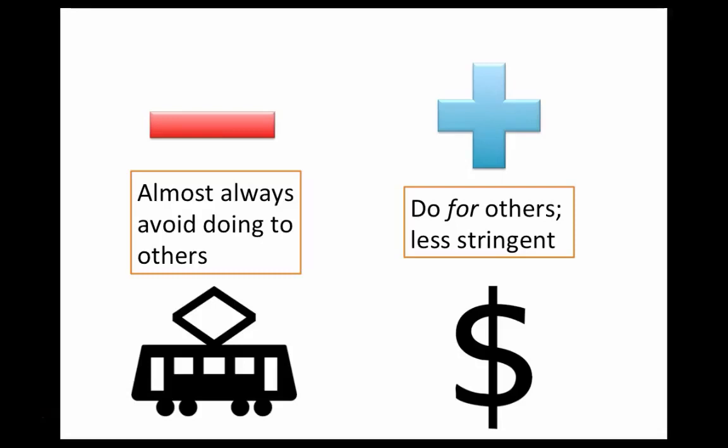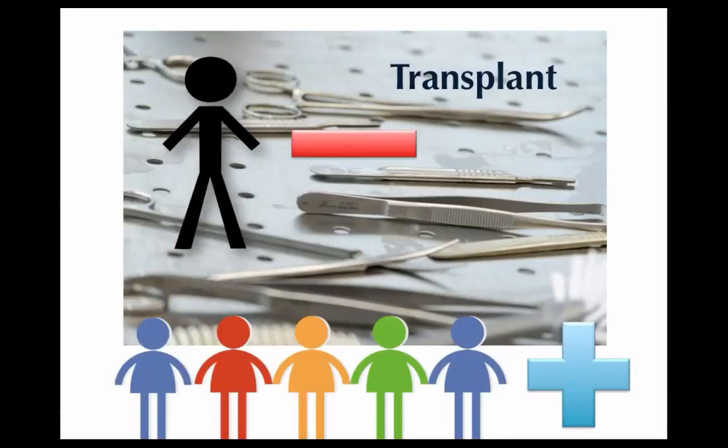Now that brings up an important point because, on the whole, positive duties are less stringent than negative ones. While you should almost always avoid injuring or killing others, you don't need to almost always do what it takes to save them, or almost always give money to charity. And this, according to Foote, is what distinguishes the trolley driver case from the transplant case.